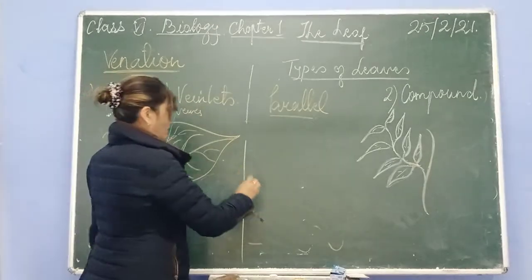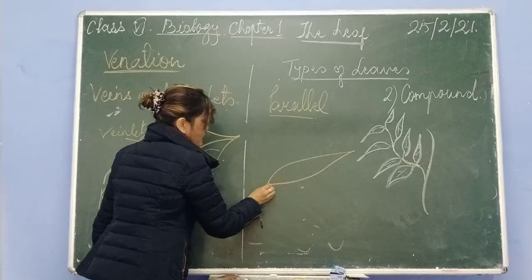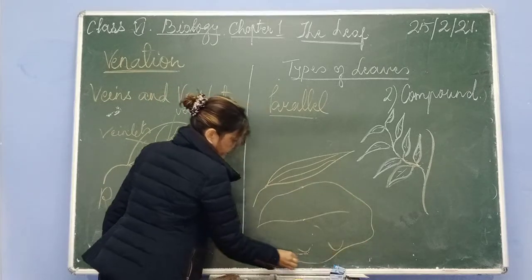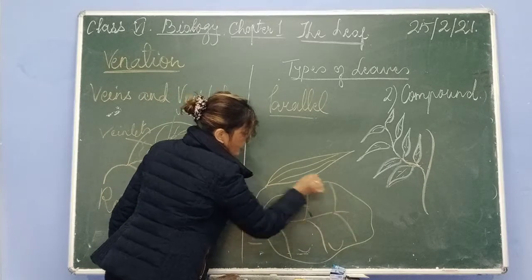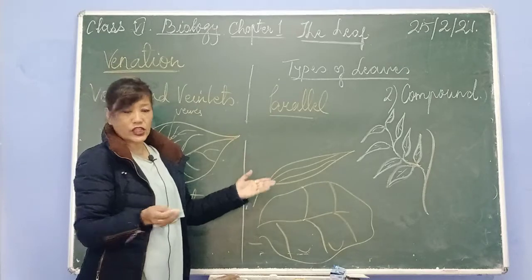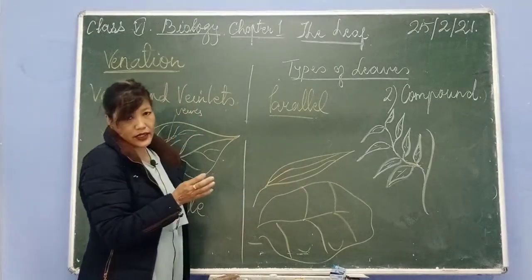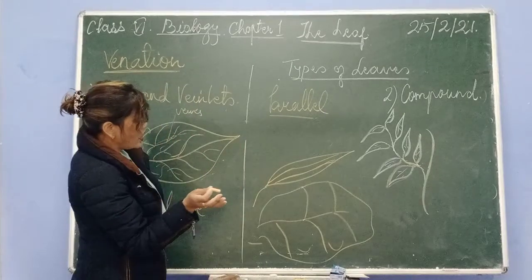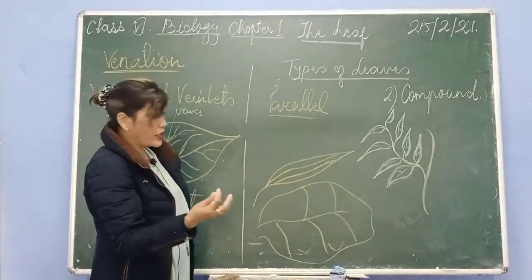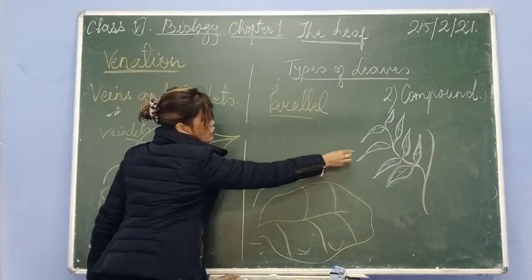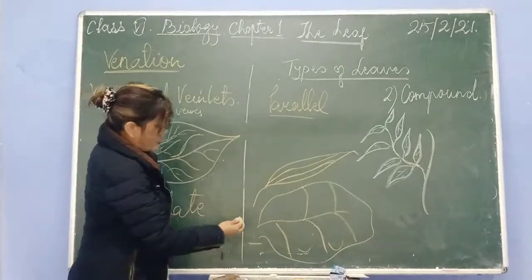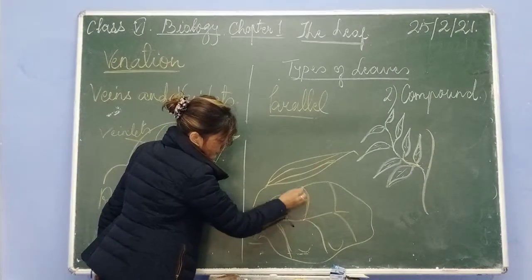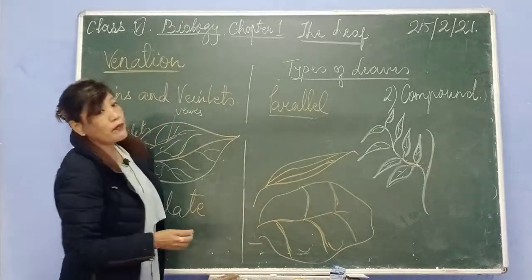What is parallel venation? You can see parallel venation in the leaves of plants like grass, wheat, or banana. In parallel venation, the veins run parallel to each other — they don't form a network-like structure, but run parallel to each other. In the leaves of grass and wheat, the veins run parallel from the base of the leaf to the apex. In the leaves of banana, the veins arise laterally from the midrib and run laterally from the midrib. So this is parallel venation.